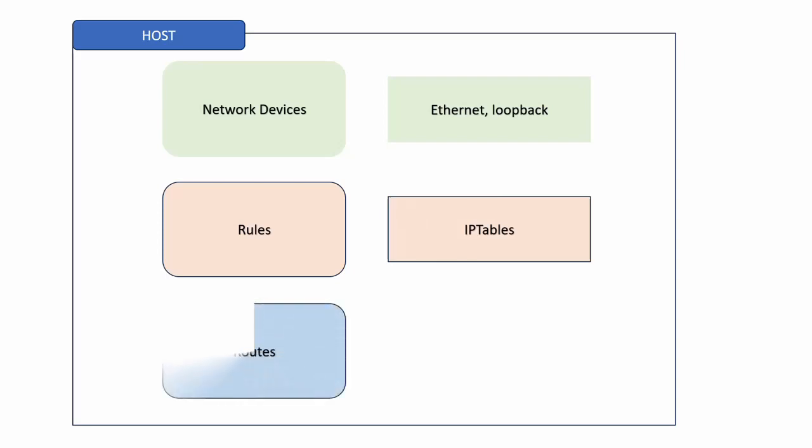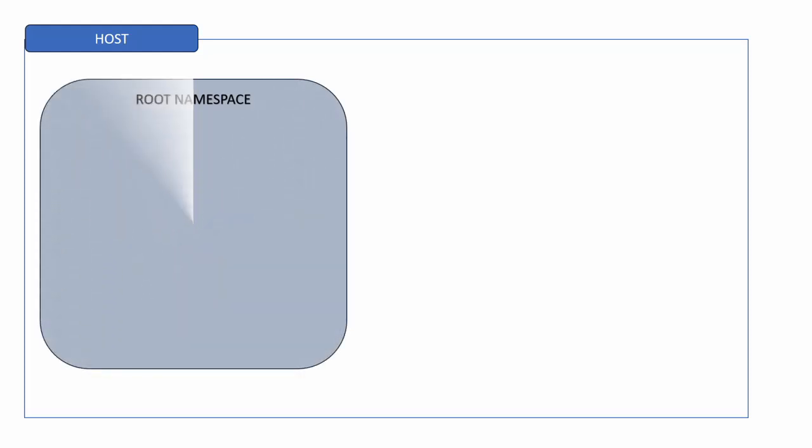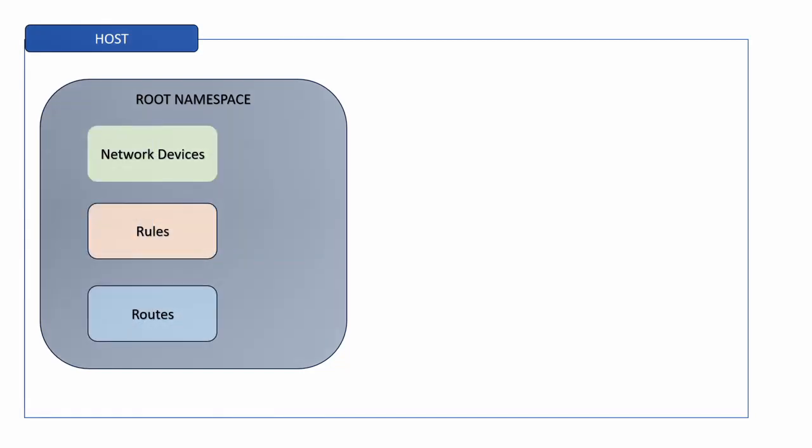Essentially, IP tables is what helps us set up a firewall for our host. And finally, we have the routing table, which is a set of rules that helps determine where a particular network packet needs to go next before it can get to its destination. So given these networking resources, the way we can leverage network namespaces is: on a given host, we have the default namespace — that is the one we see when we log into a system — and that has its own set of networking resources.